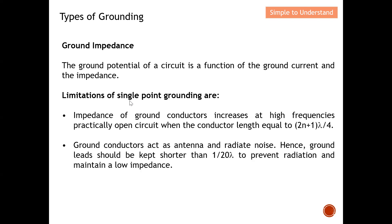Let's take a look at the limitations of single point grounding. The impedance of the ground conductor increases at high frequency — the higher the frequency, the higher the impedance. They can become a practically open circuit when the conductor length equals (2m+1) × lambda/4, where m is 1, 2, 3, 4, etc. At these points they become a potential open circuit, which means high impedance. This can be an issue because we want current to return through the ground plane, and this becomes a potential EMC problem.